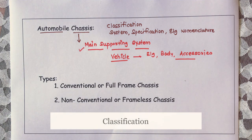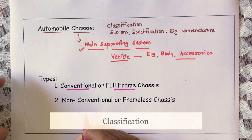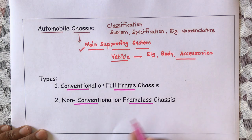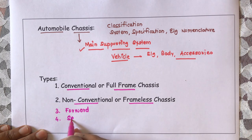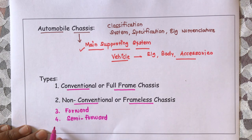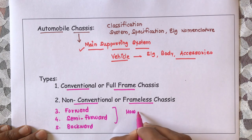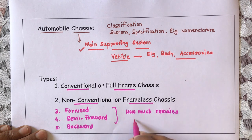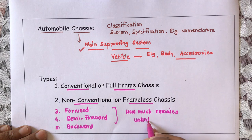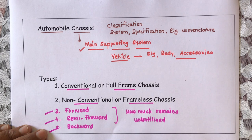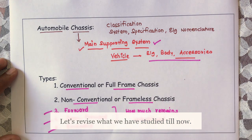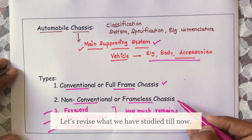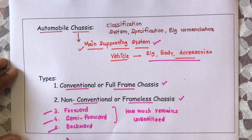That automobile chassis may be classified as conventional or full frame chassis, or it can also be classified as non-conventional or frameless chassis. Similarly, it may be classified as forward chassis, semi-forward chassis, or backward chassis — depending upon how much space remains unutilized. So chassis types are: conventional or full frame, non-conventional or frameless, and forward, semi-forward, or backward.